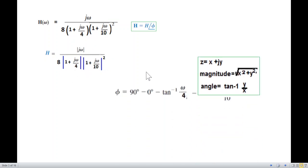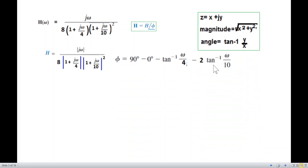Now the phase angle formula: this is the form x plus jy. So the angle is tan inverse y over x. The angle for j omega is 90 degrees. For the denominator angles, we put the minus sign.